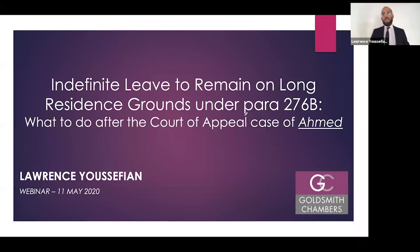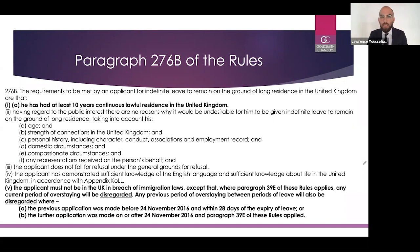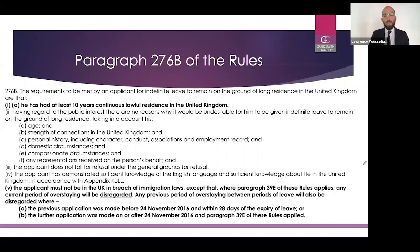So, indefinite leave to remain on long residence grounds. This is under paragraph 276B, and really it's going to be a brief overview. Paragraph 276B of the rules — you should be fairly familiar with this if you're practicing immigration law. This paragraph governs the requirements for indefinite leave to remain, and here we're really primarily concerned with paragraph 276B(1)(a), the continuous lawful residence requirement, and finally that the applicant must not be in the UK in breach of immigration laws. We're going to look at the interplay between those two sub-paragraphs and briefly examine the Court of Appeal case of Ahmed.